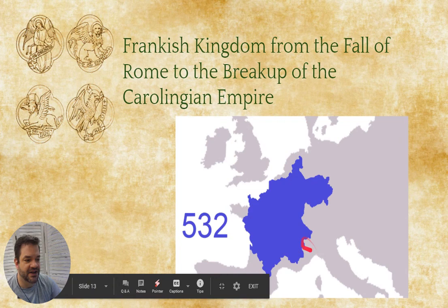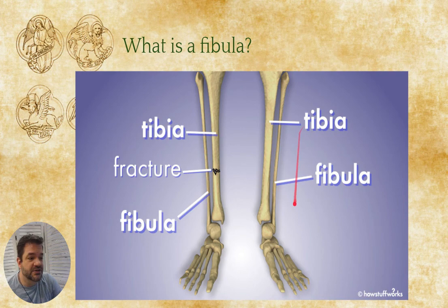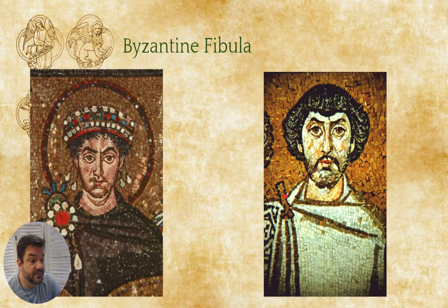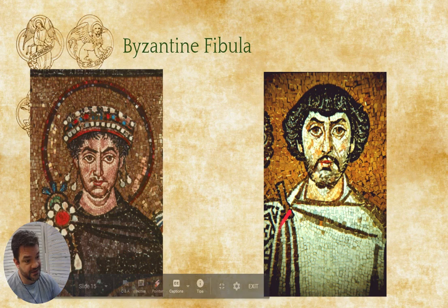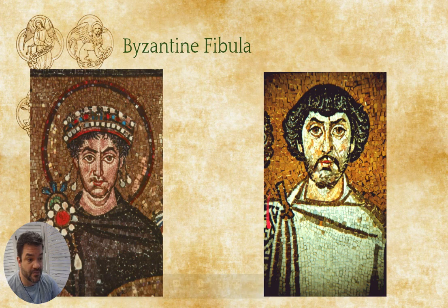We're going to be looking at a Merovingian fibula — and by fibula we don't mean the thin bone in your leg; we're talking about a pin, a piece of jewelry. We've seen fibulas before with the Byzantines — on the Justinian mosaic, Justinian has one that's enormous, richly decorated with garnet and pearls in gold, while the bishop next to him has a much more modest fibula.